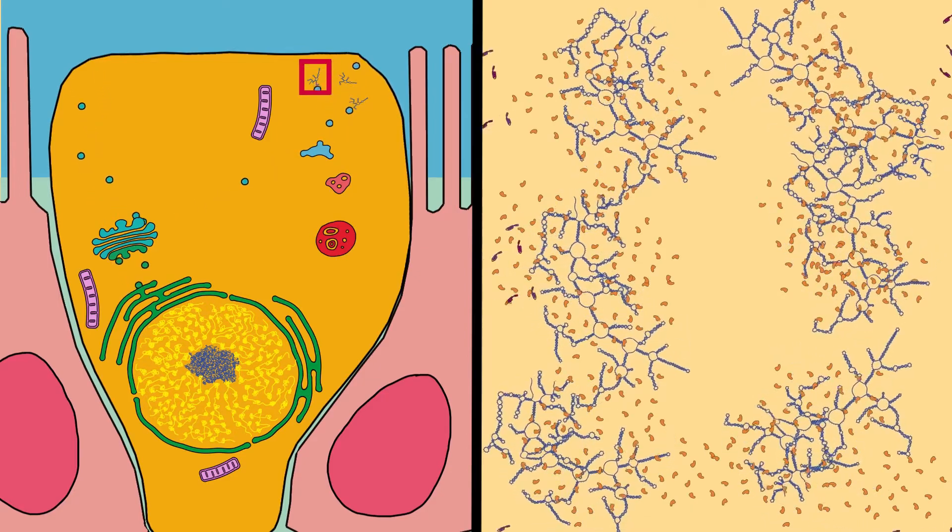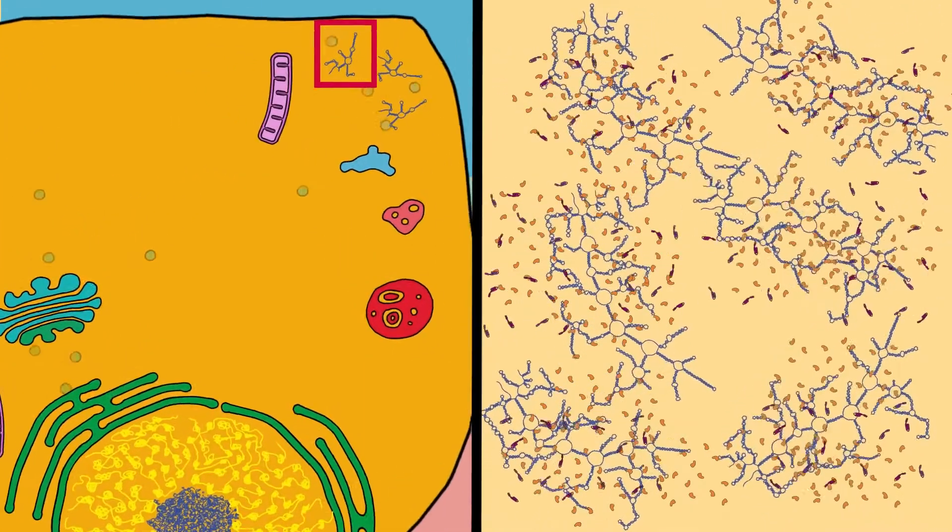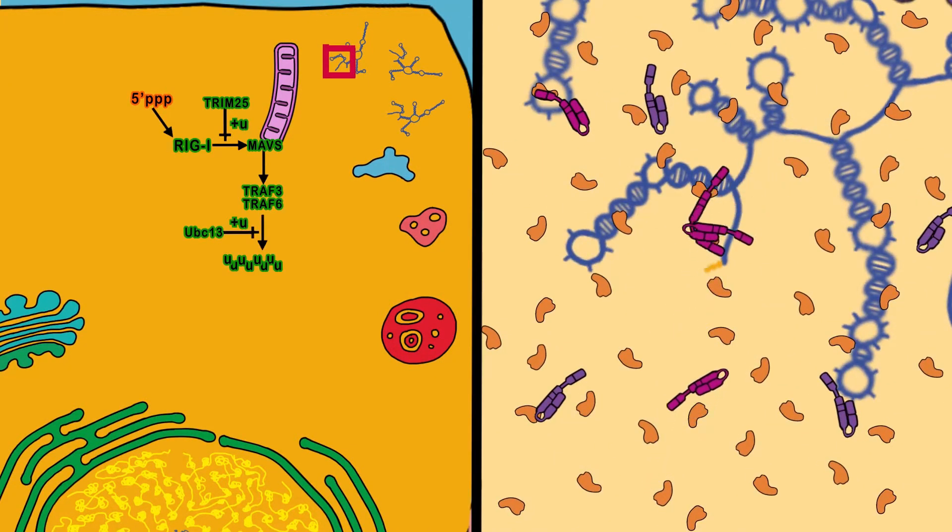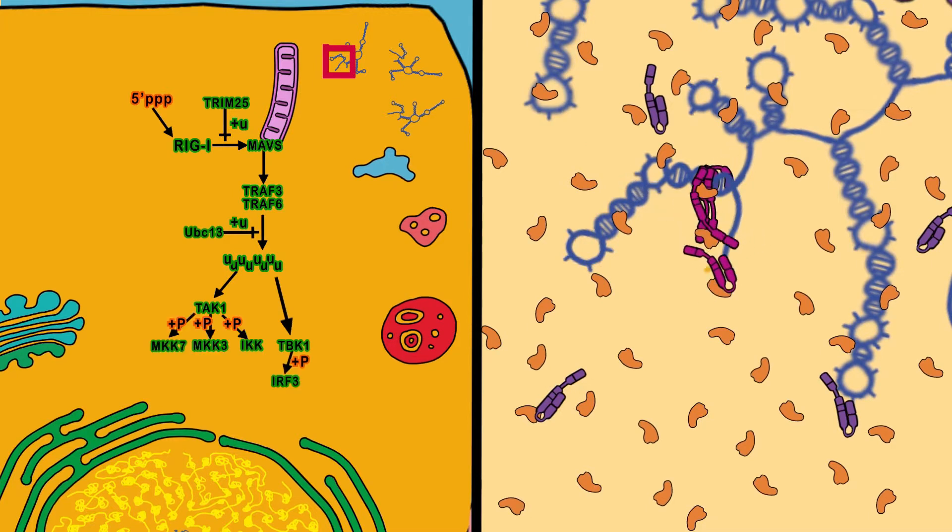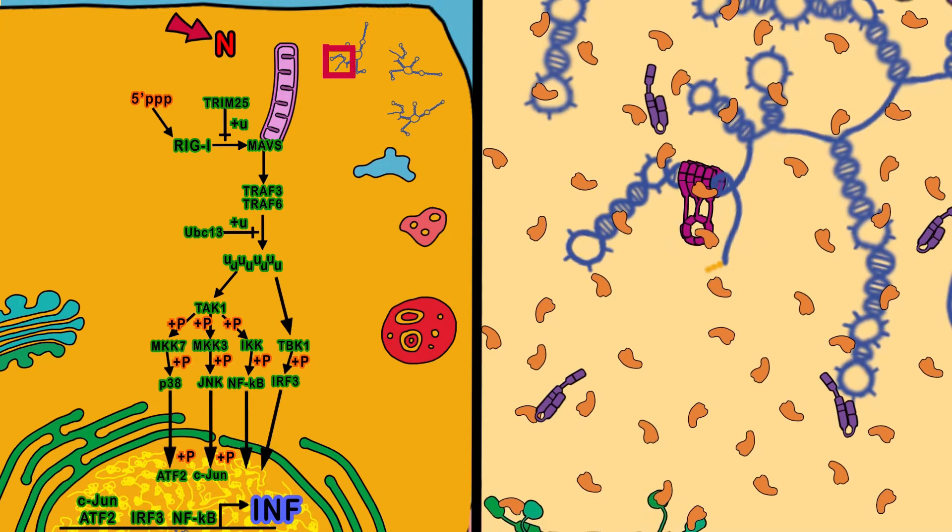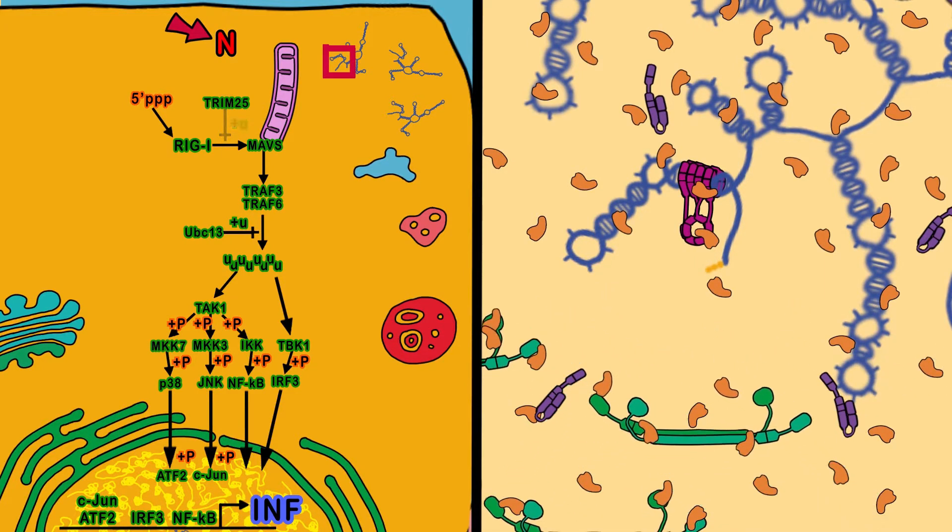The cell immediately attacks the viral genomes with RIG-like proteins. But this time, a large number of viral genomes entered the cell, and with them a large number of nucleocapsid proteins. Nucleocapsids defend the virus by inhibiting the TRIM25 protein, interrupting one of the metabolic pathways that activate interferon genes.